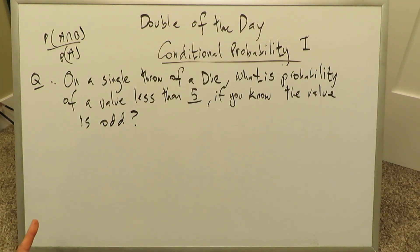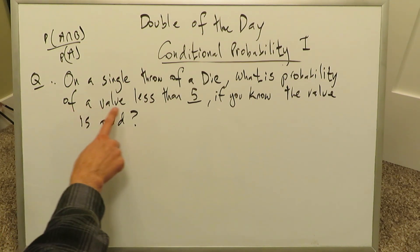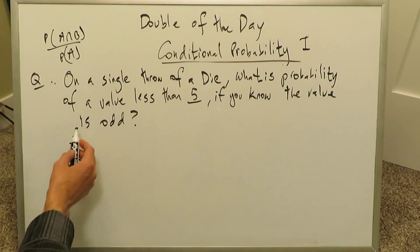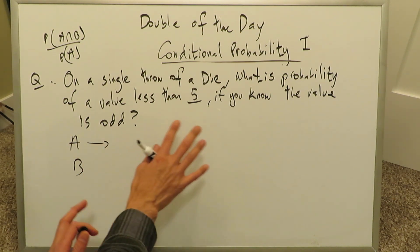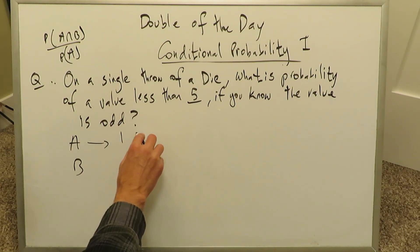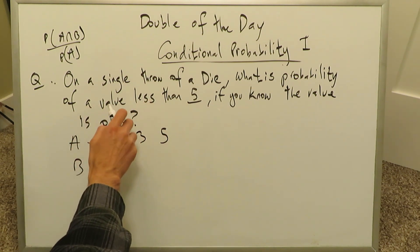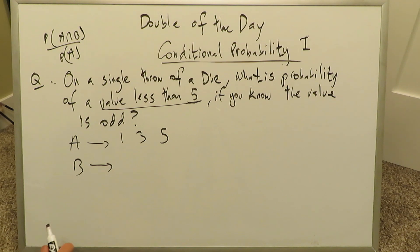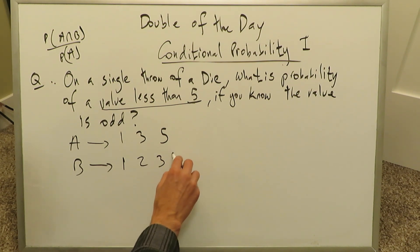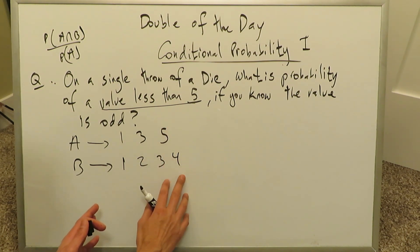Our second question: on a single throw of a die, what is the probability of getting a number less than 5 if you know the value is going to be odd? A represents the odd numbers: 1, 3, and 5. B represents numbers less than 5 on a die — since a die has numbers 1 through 6, those are 1, 2, 3, and 4. Less than, but not equal to, 5.